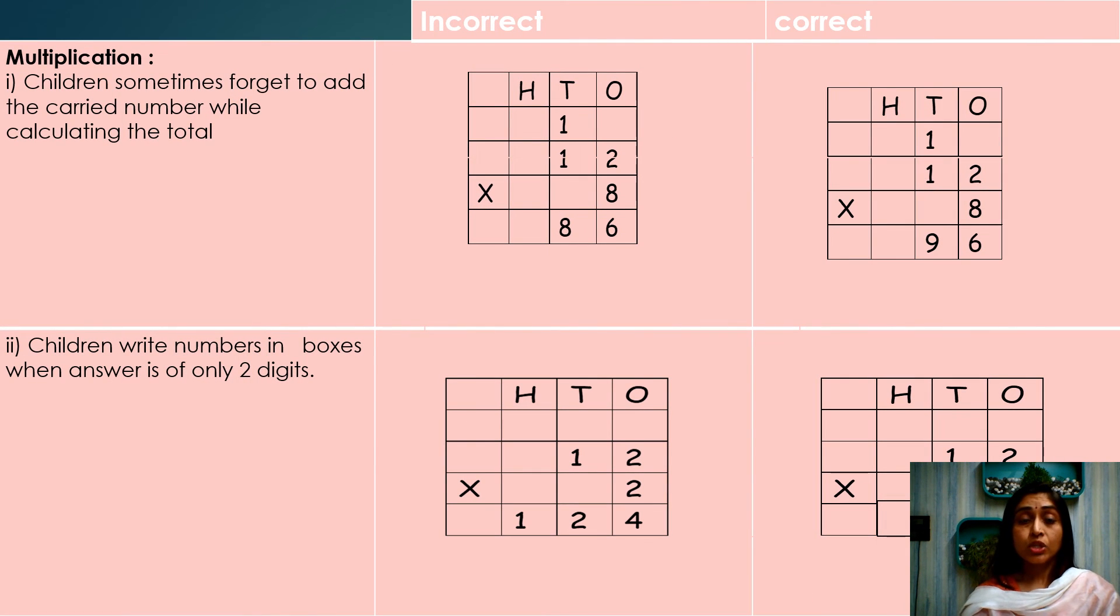Multiplication. Children sometimes forget to add the carried number while calculating the total. 12 multiply 8 is equal to 96. But instead of 96, they write down 86. They forget to count the carried number.